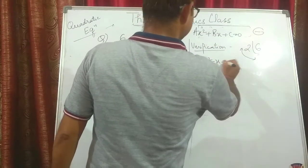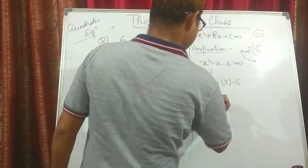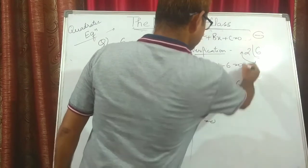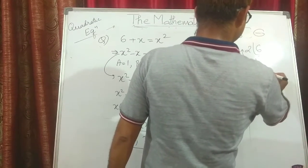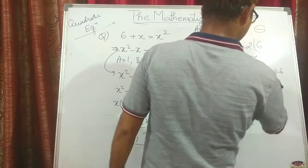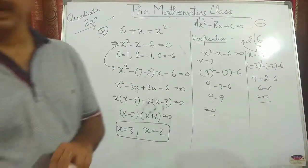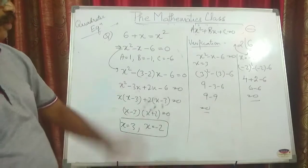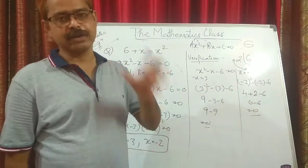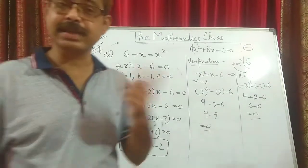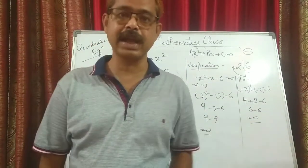To verify: when X equals 3, X squared minus X minus 6 gives 9 minus 3 minus 6 equals 0. When X equals minus 2: (minus 2) squared minus (minus 2) minus 6 gives 4 plus 2 minus 6 equals 0. Both roots satisfy the equation, confirming our solution is correct. I'm ending the class — please go through this at least twice to clear your concepts. We'll be moving on to exercise 7 next class. Please like, subscribe, and share. Thank you.